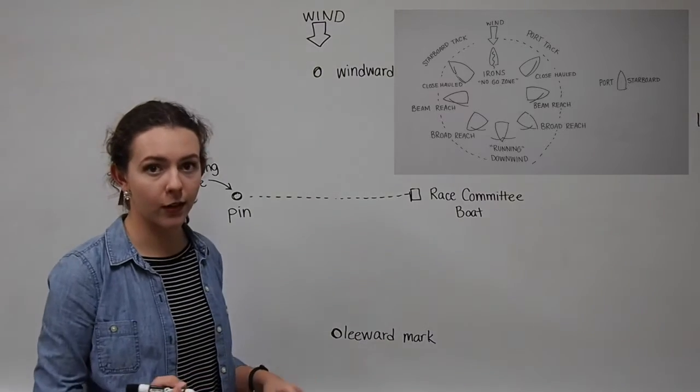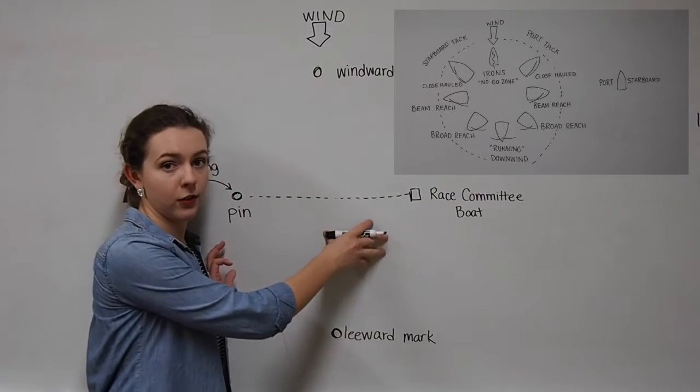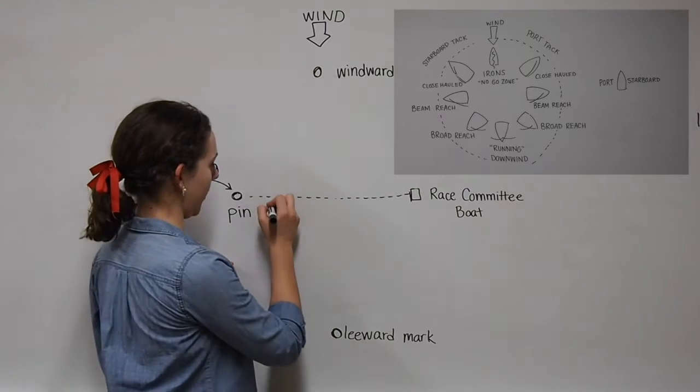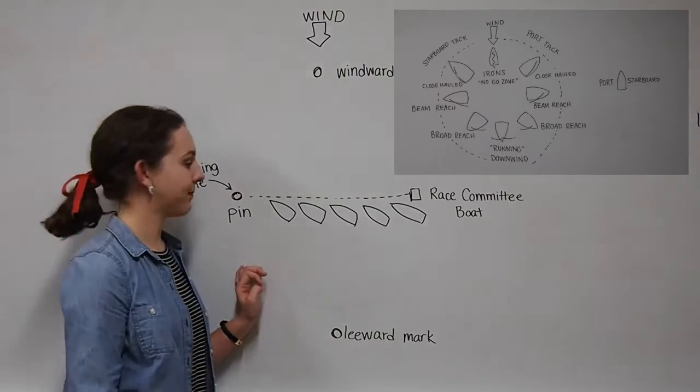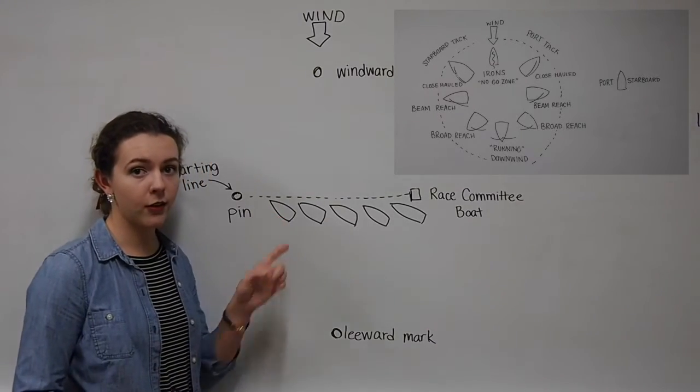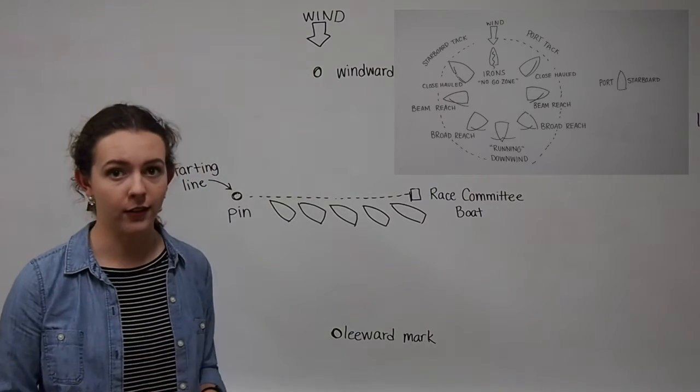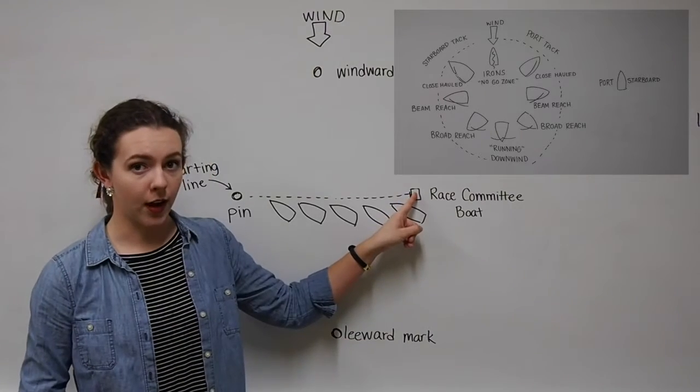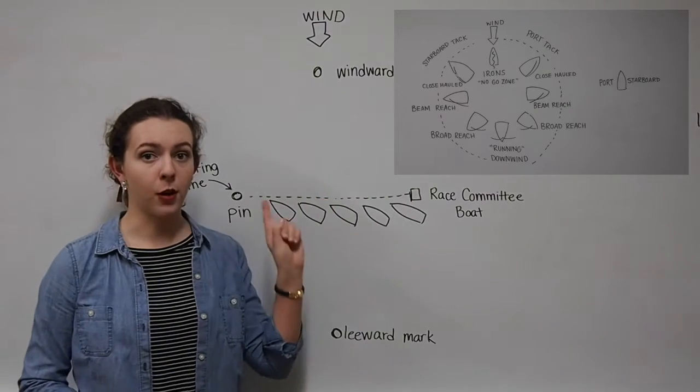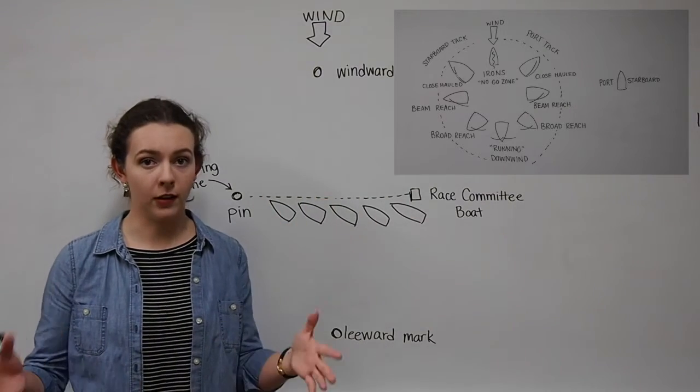So before the start, all of the boats will line up along the starting line, but they'll stay to leeward of the starting line. So you'll see a bunch of boats doing this. They are not allowed to cross the starting line, so they are constantly checking to make sure that they are not breaking any rules. And the race committee over here has someone watching down the line to make sure that no one has crossed over illegally before they're allowed to.